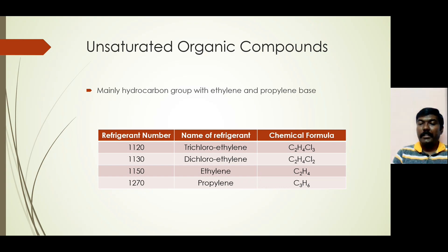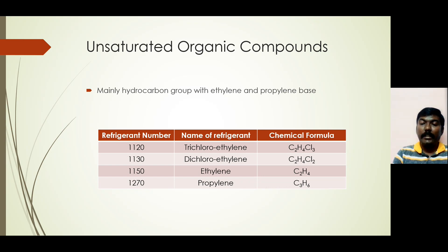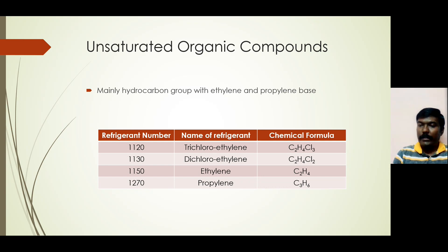All these are examples of primary refrigerants. We talked about halocarbon compounds, azeotropes, hydrocarbon compounds, inorganic compounds, and unsaturated organic compounds — all falling under the classification of primary refrigerants, wherein these refrigerants can be directly taken to the refrigerated space to remove heat from the storage space or the stored material. In the next video, we will talk about the thermodynamic properties of refrigerants. Thank you.